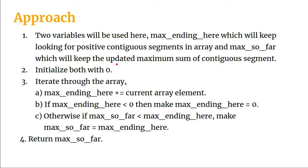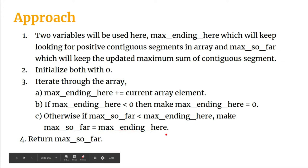We are going to initialize both of these variables with zero and run a loop through the array. Inside the loop, we will add the current array element to the max_ending_here value. If max_ending_here is less than zero, we make it zero, because there's no point keeping a negative value — we are always looking for the maximum sum. Otherwise, if max_so_far is less than max_ending_here, we update max_so_far with the value of max_ending_here. Finally, max_so_far will contain the maximum sum of the contiguous subarray.